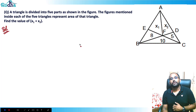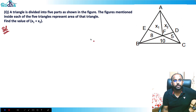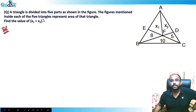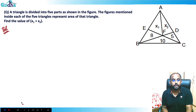Hi everyone, let's look at this next question. A triangle is divided into five parts as shown in the figure. The figures mentioned inside each of the five triangles represent the area of the triangle. Find the value of x1 plus x2.